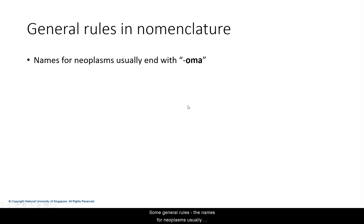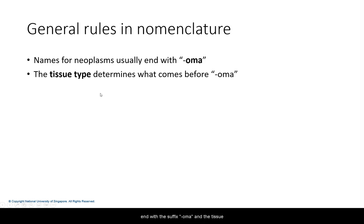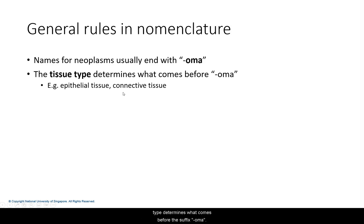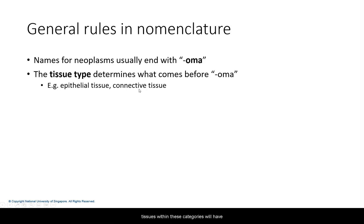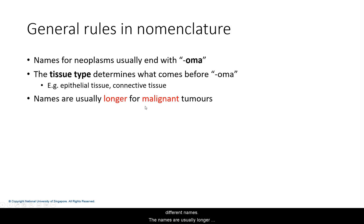Some general rules. The names for neoplasms usually end with the suffix -oma, and the tissue type determines what comes before the suffix -oma. Tumours of the epithelial tissue versus connective tissue, as well as the specific types of tissues within these categories, will have different names.